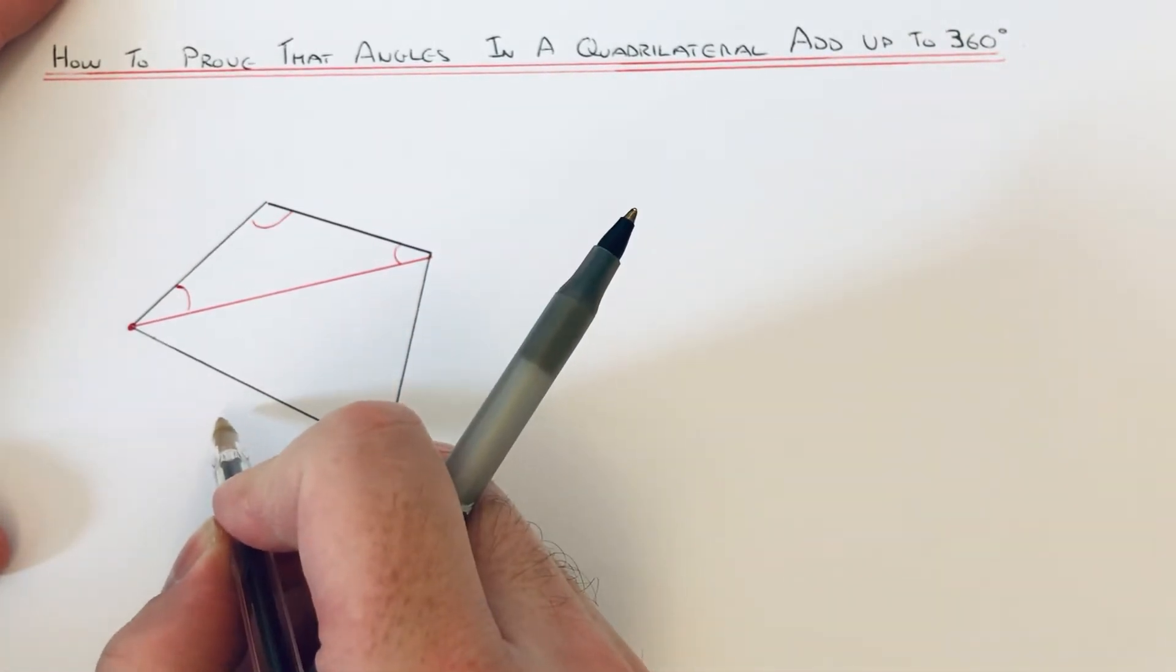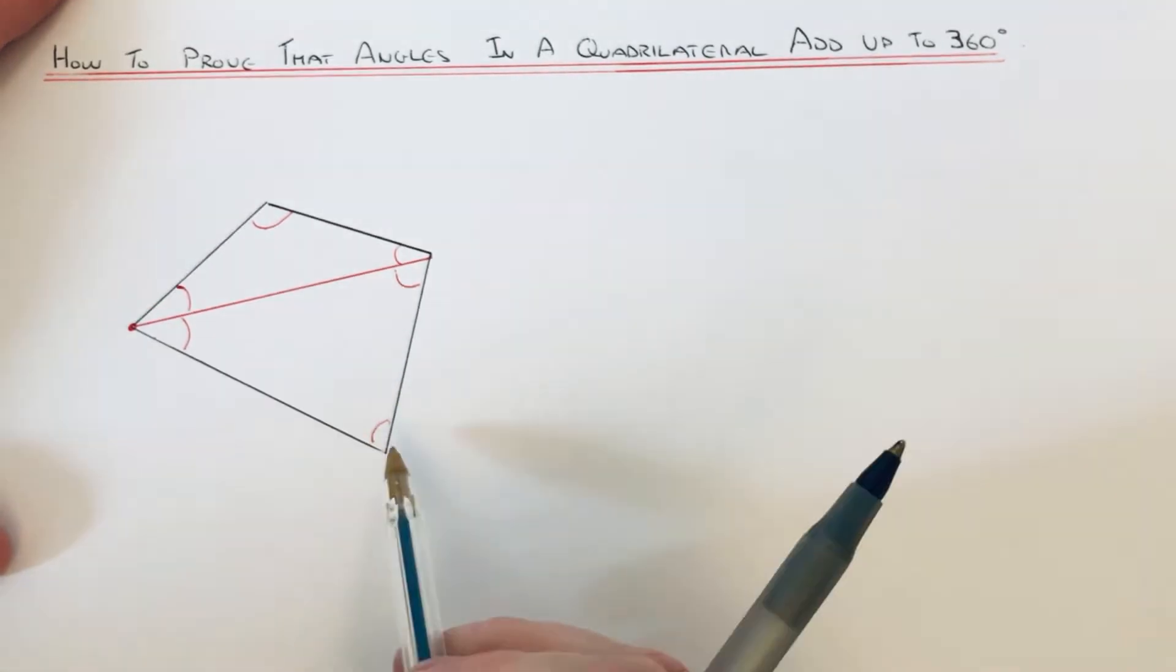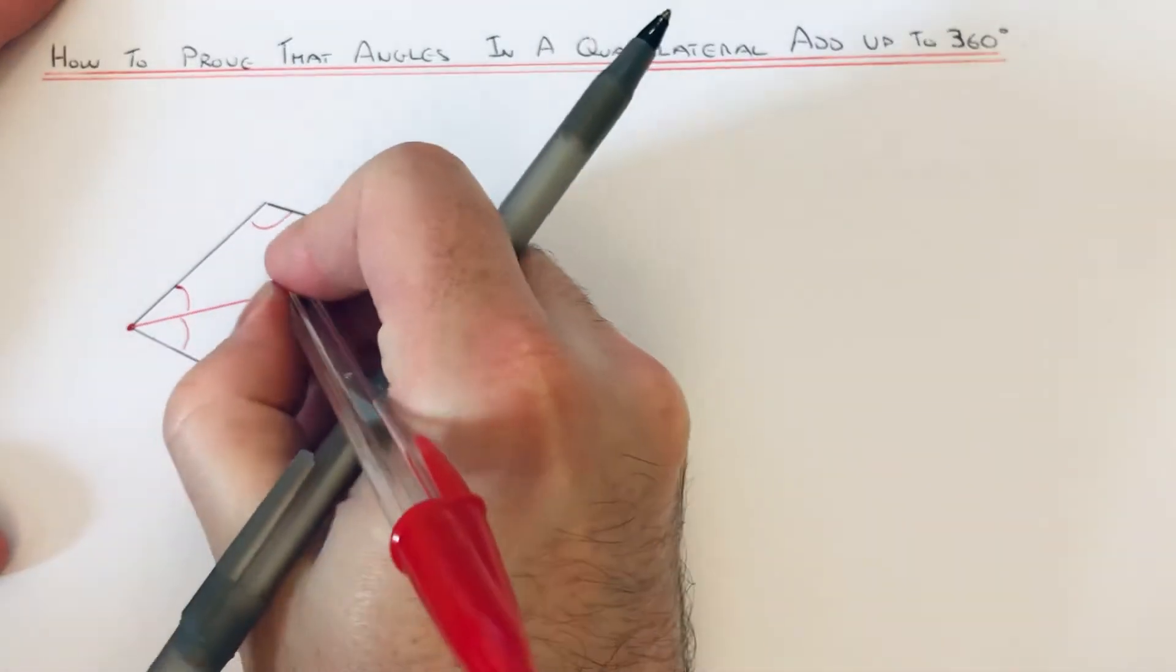And if you notice, the angles inside each triangle form the angles in the quadrilateral. So we split it into two triangles.